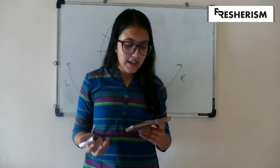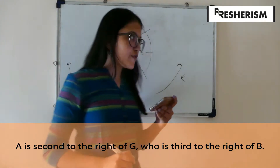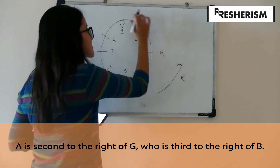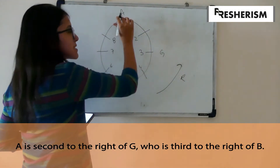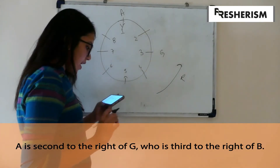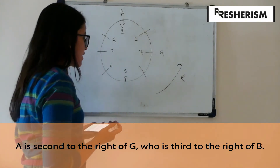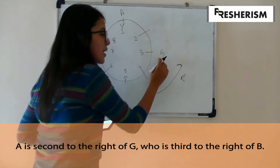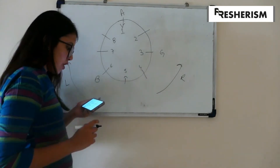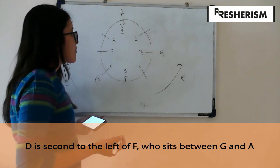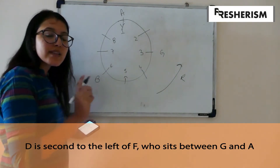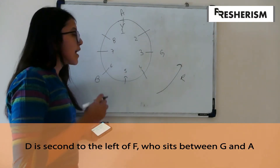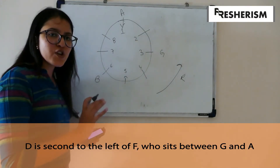Let us now look at the conditions given. A is second to the right of G. If G sits over here, then A will be second to the right of G, so A sits over here. Now, G is third to the right of B. If B is here, then G will be third to the right of B. Moving on, D is second to the left of F. We neither have a definite position for D nor for F, so we keep this condition on hold for now.